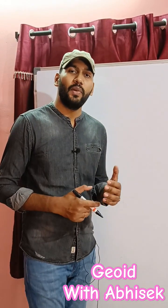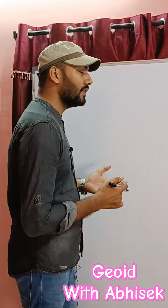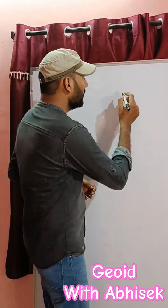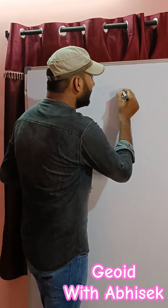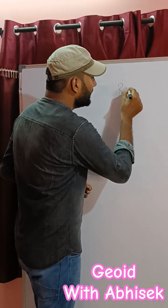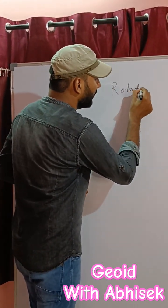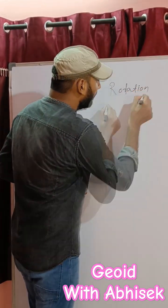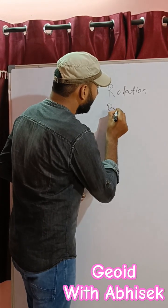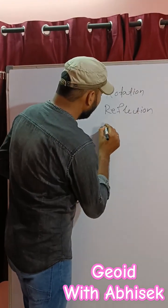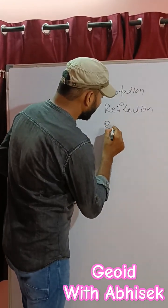In crystallography, to represent the 32 classes for the point groups, we used to represent three types of symmetry: rotation, reflection, and rotoinversion.